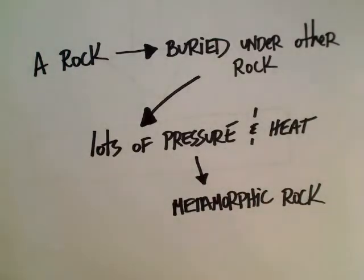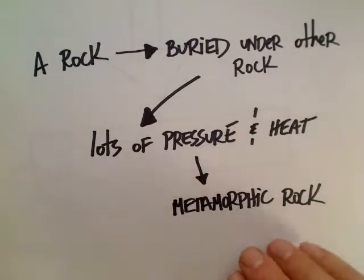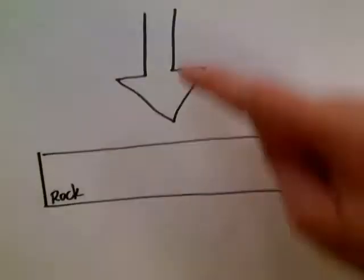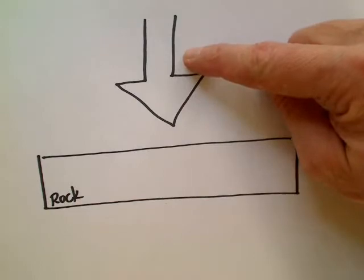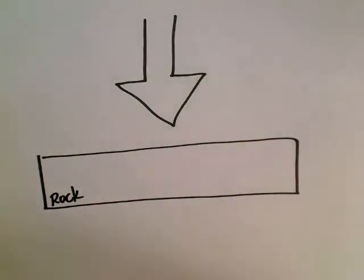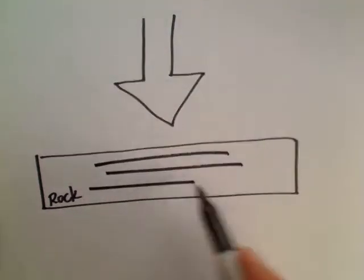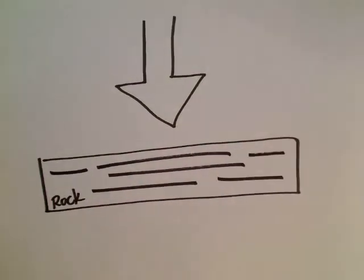That pressure and heat will do two things: it will often partially melt the existing rock, and it creates conditions for chemical reactions where some minerals actually change into other minerals. All that pressure squishes the rock and you tend to get layers that go perpendicular to the pressure — those are called foliation and sometimes banding.